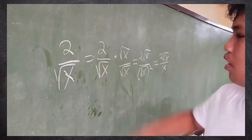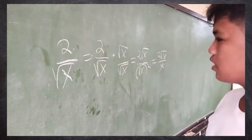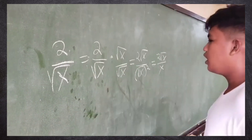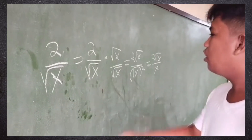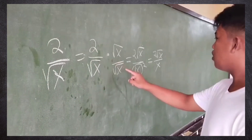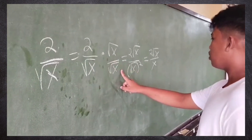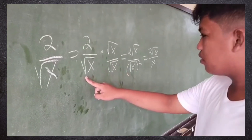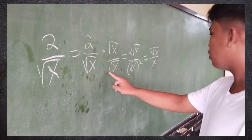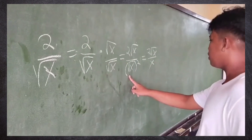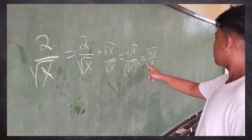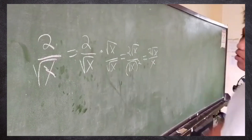For 2 over square root of x: square root of x times square root of x equals x, giving us 2 square root of x over x.